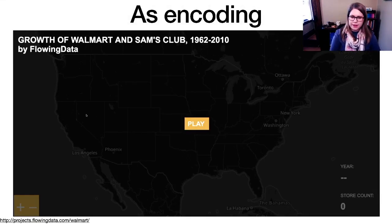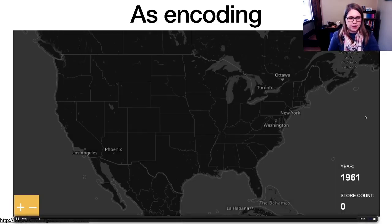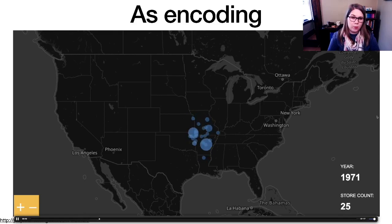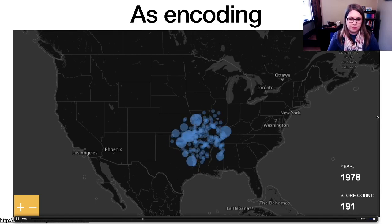Another one that I like is this visualization by Nathan Yao about the growth of Walmart. And this shows again, it's a map. So we've got the geographic coordinates as two axes here. And then we're putting dots on the map where Walmart or Sam's Club opened. But then we're able to visualize even one more variable, which is time by doing an animation.